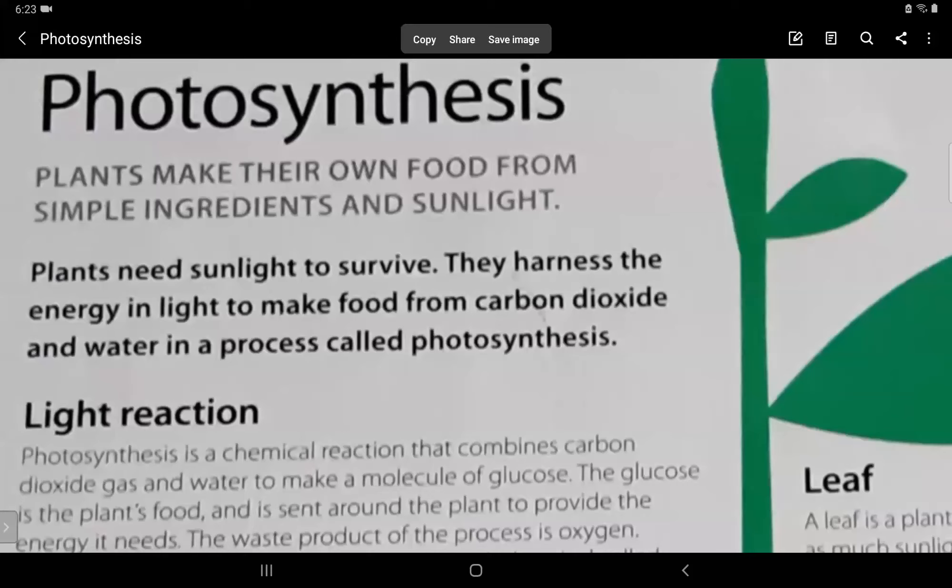Now photosynthesis. Plants make their own food from simple ingredients and sunlight. Plants need sunlight to survive. They harness the energy in light to make food from carbon dioxide and water in a process called photosynthesis.